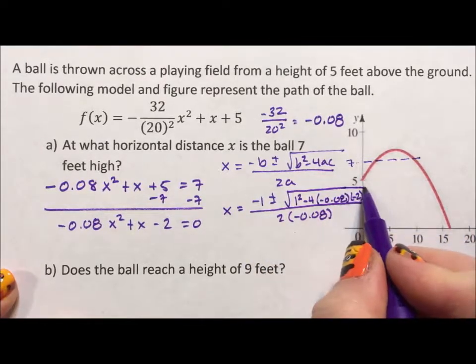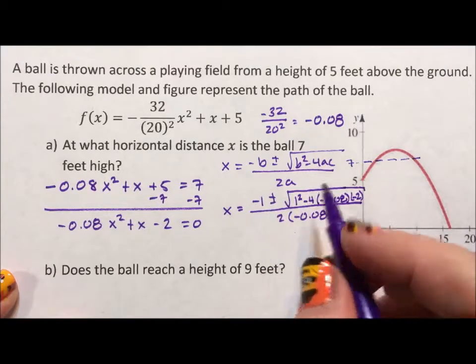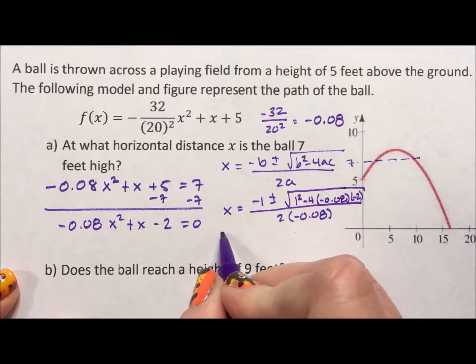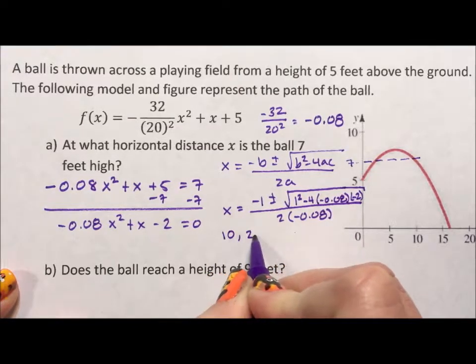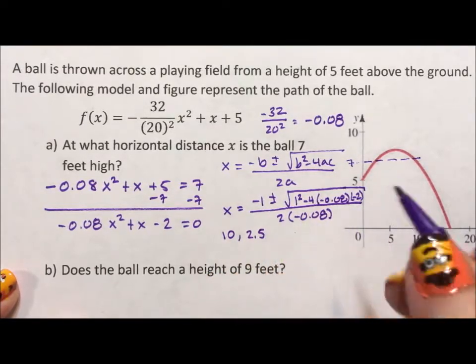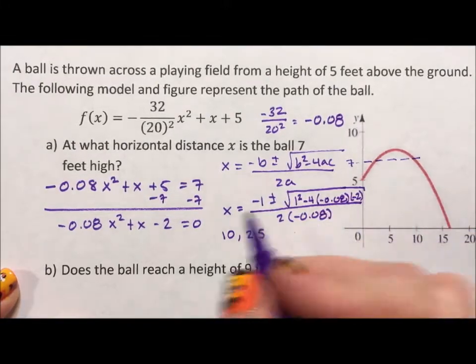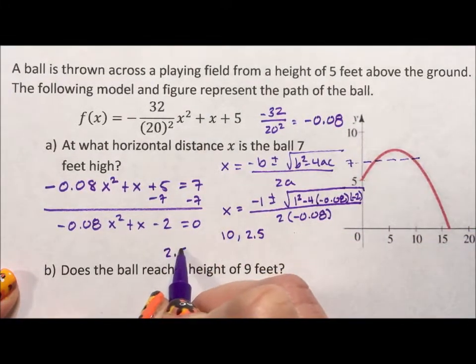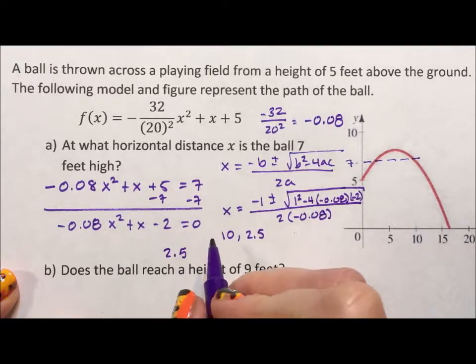So I plugged all of this into my calculator once for the negative, once for the positive. The two answers I got were 10 and 2.5. Because of the negative a, you get the answers backwards. So it reaches 7 feet at 2.5 seconds.